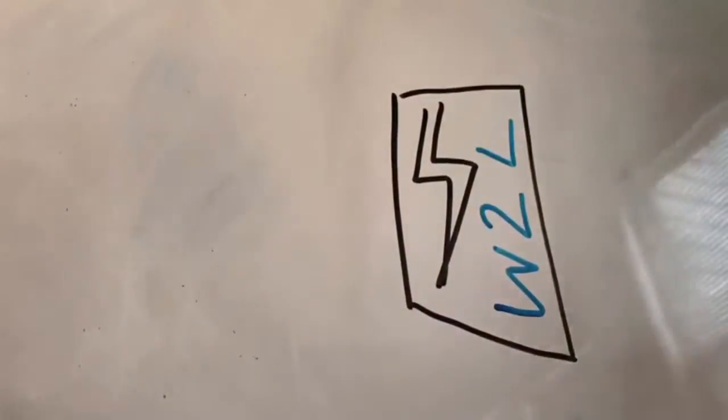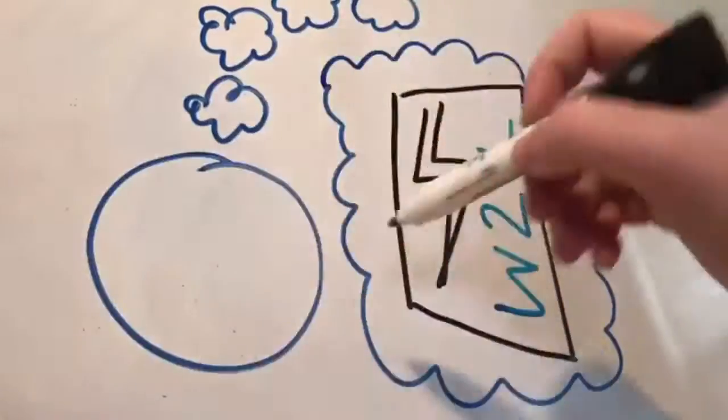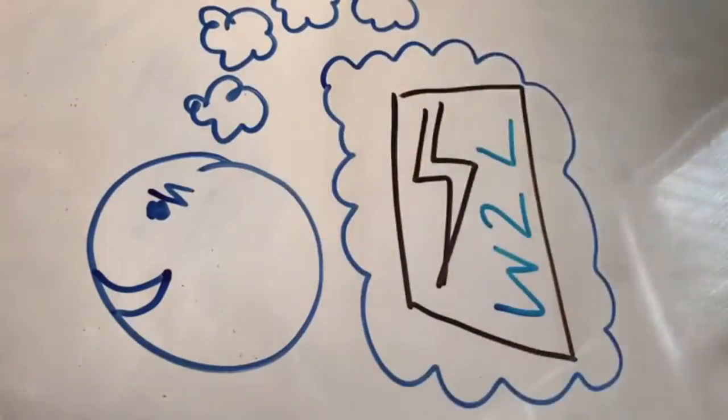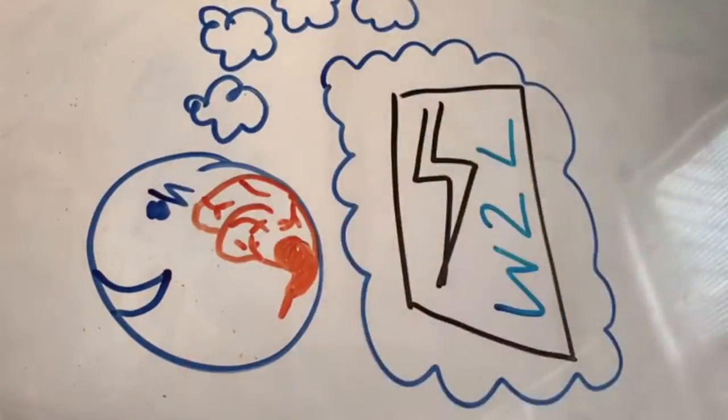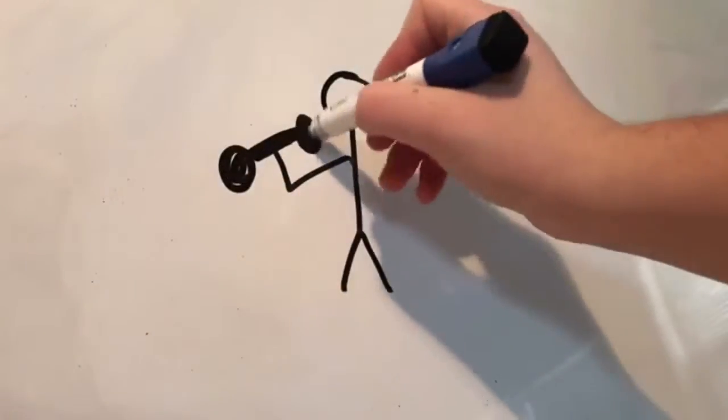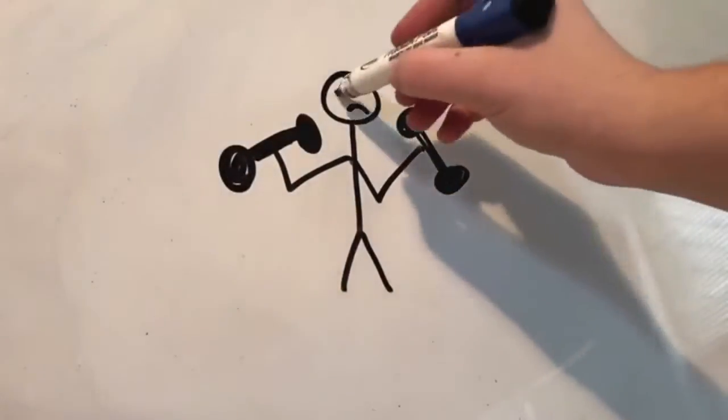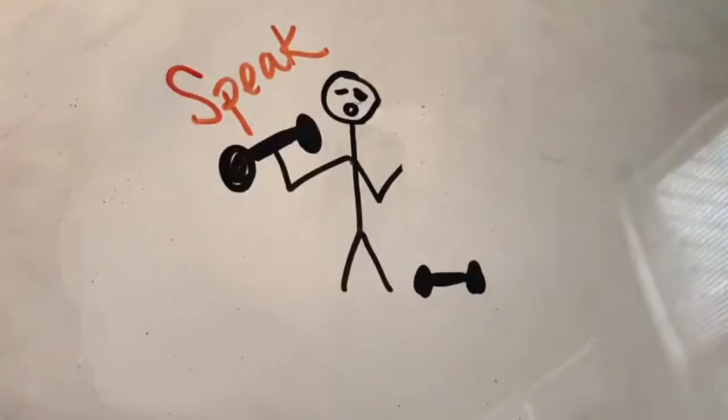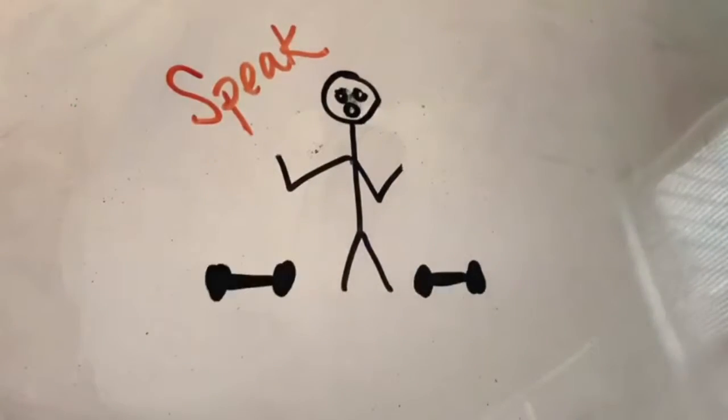One strategy that I want to incorporate from class is power writing as a form of writing to learn. Next semester during student teaching I will teach Speak, a book dealing with rape. I can use power writing as informal assessment and as a task for students to think and reply to the heavy topics we read in class.